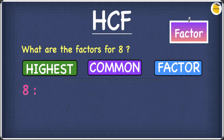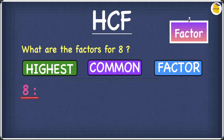Let's have a look at an example: what are the factors of 8? The factors of a number always start with 1 and end with the same number. So for 8, we can straight away write down 1.